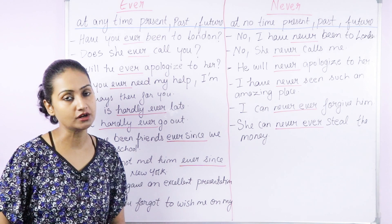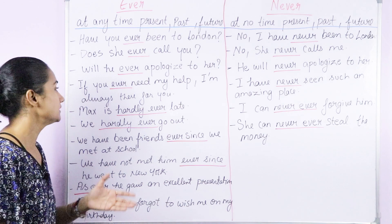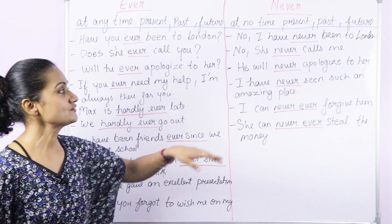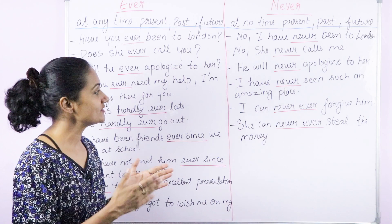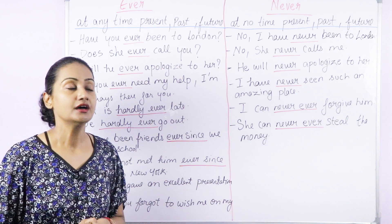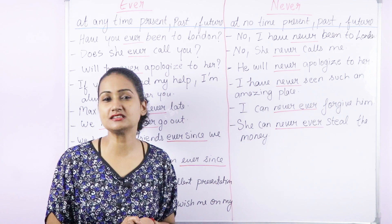If you ever need my help, I am always there for you. Here we are talking about the future — at any time in the future if you need my help, I am always there for you. I have never seen such an amazing place. We use never when talking about at no time in the past. You can frame sentences like: I have never met such an amazing person, I have never seen such a beautiful movie, I have never seen such a stupid movie.